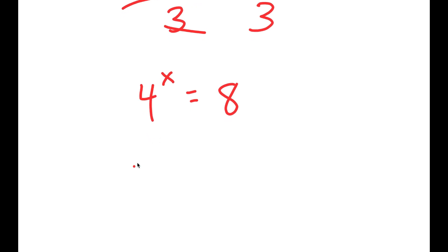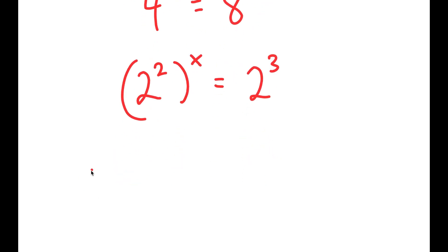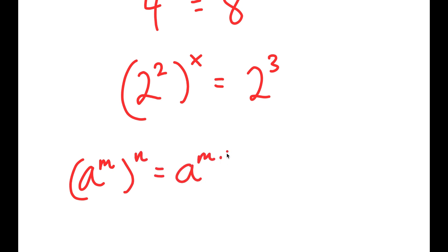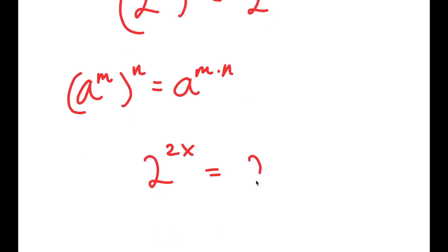Now I'm going to replace 4 as 2 squared, so I get 2 squared to the power of x is equal to 2 to the power of 3. And if I have something in the form a to the power of m to the power of n, this is equal to a to the power of m times n. So 2 to the power of 2x is equal to 2 to the power of 3.